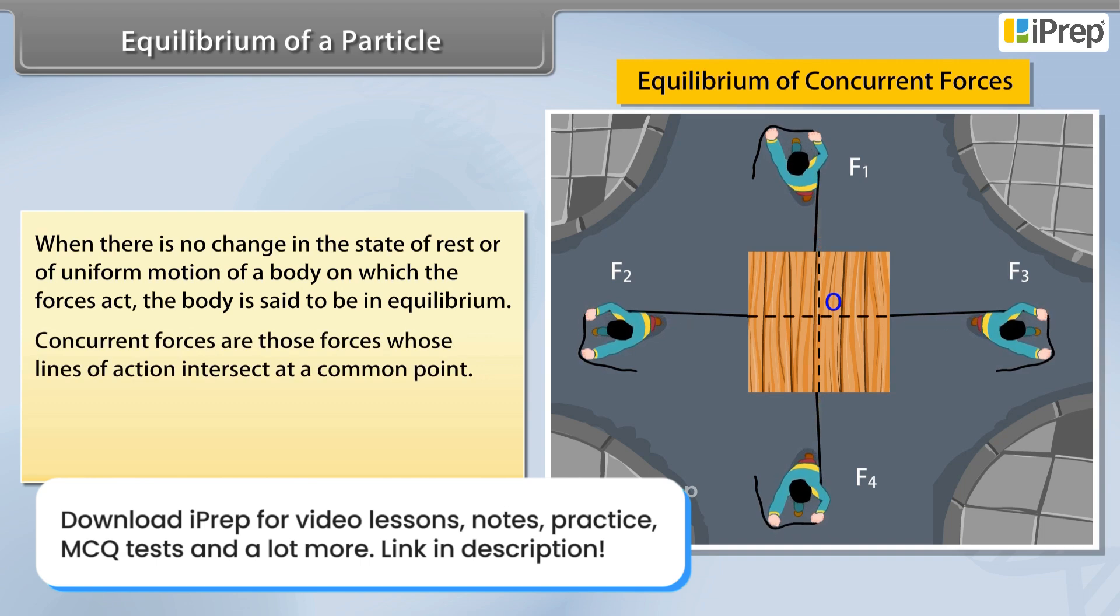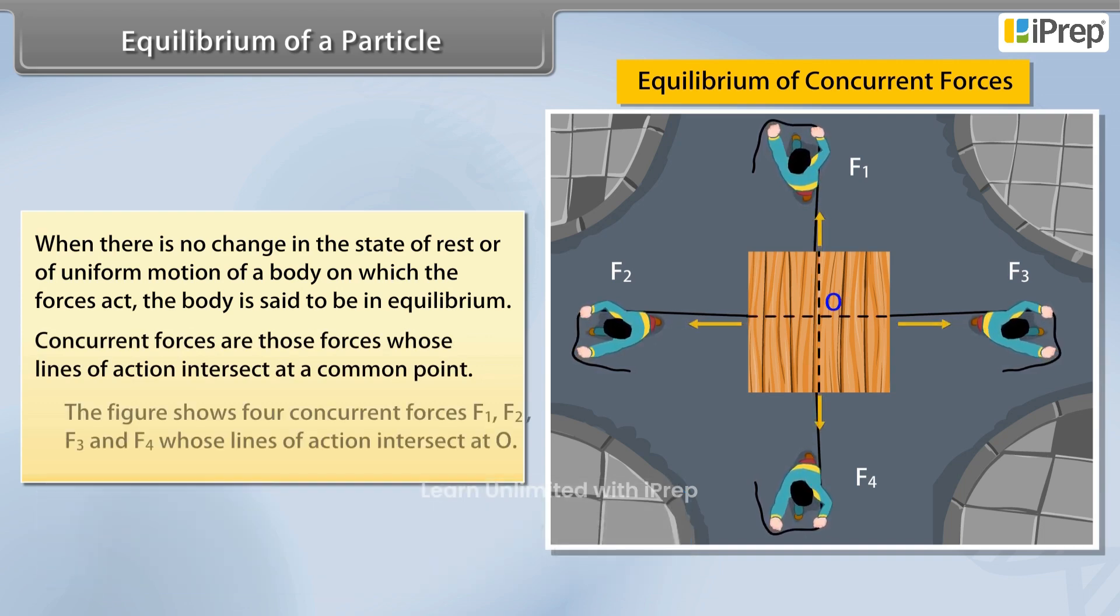Concurrent forces are those forces whose lines of action intersect at a common point. The figure shows four concurrent forces F1, F2, F3, and F4 whose lines of action intersect at O.